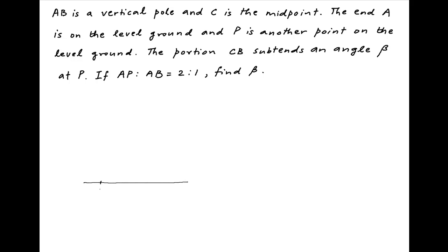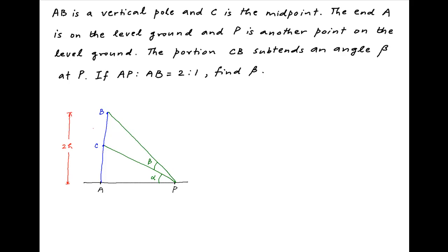We are given that end A of the vertical pole AB is on the level ground and P is another point on the level ground some distance away. AB is the vertical pole and C is the midpoint of this vertical pole. We are also given that the portion BC subtends an angle beta at point P, and the portion AC subtends an angle alpha at point P. Assume that the length of the vertical pole AB is equal to 2H. Since C is the midpoint, BC is equal to AC which is equal to H.